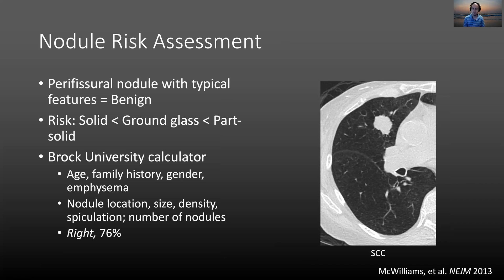You may use the morphology of the nodule itself. This nodule has a lobulated contour — maybe even a little spiculation — and it's also a large nodule. Size matters: the larger the nodule, the more likely it is to be malignant. You would certainly be suspicious of this nodule, which turned out to be a squamous cell carcinoma. Absent those features, if you have less experience or are unsure, you might use risk calculators. The best known is the calculator developed by Brock University in Canada, which incorporates patient age, family history of lung cancer, sex, presence of emphysema, and nodule characteristics including location, size, density, spiculation, and total number of nodules — giving a percentage likelihood of malignancy to help triage nodules.